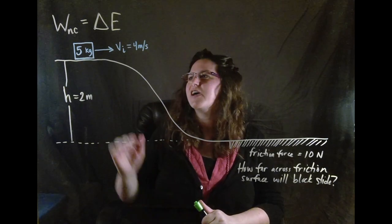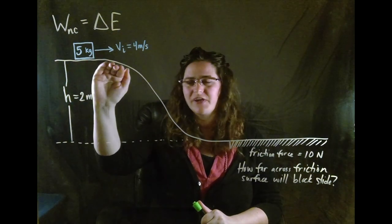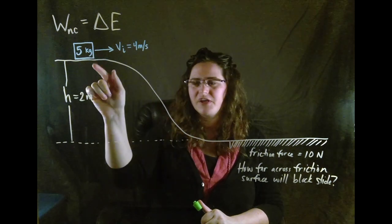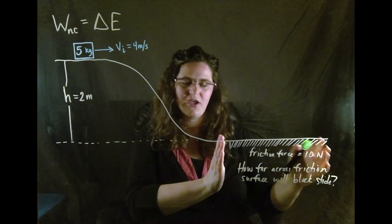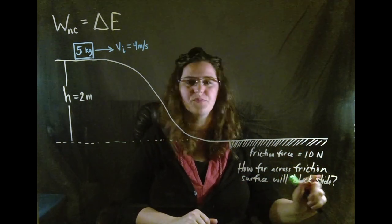So we have a five kilogram block that is up on top of a hill. It's going to slide down the hill on a frictionless surface and then meet a patch of friction here. And the question is how far across the friction surface will the block slide?